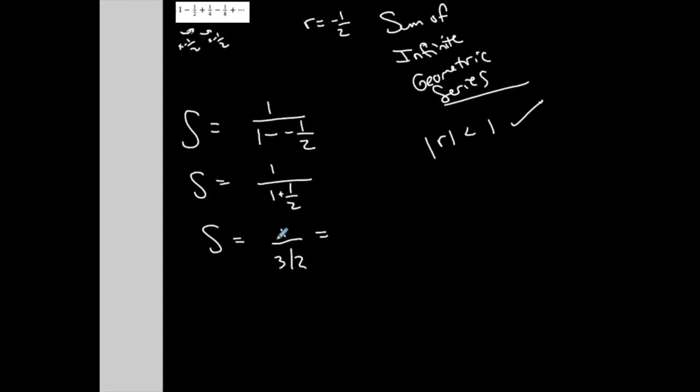One over three-halves, which is equal to, if I have one over, I'm going to show my work, but if I have this is a complex fraction, this divided by this. One divided by three-halves. Keep the first, flip the second, change to multiplication. This is two-thirds.